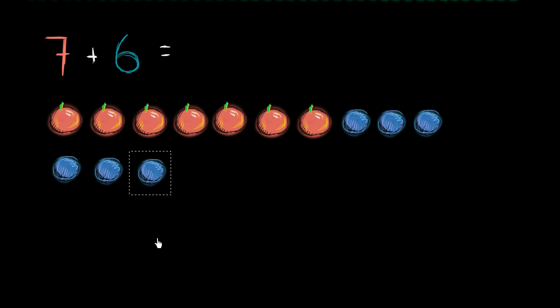Now, how many total pieces of fruit do I have in all now? Well, I started with seven, so that's seven. And so if I keep counting, this is seven.